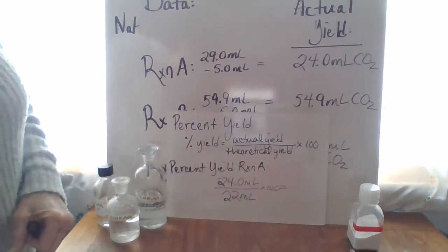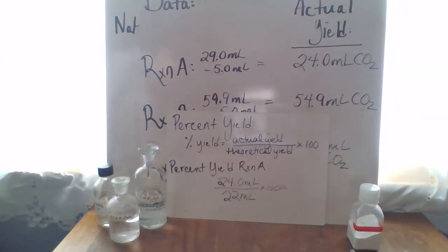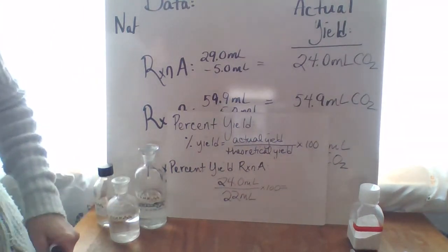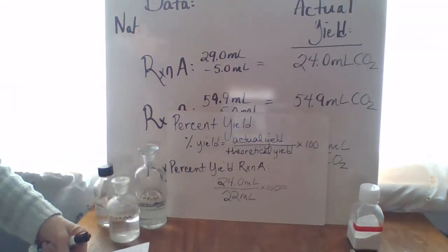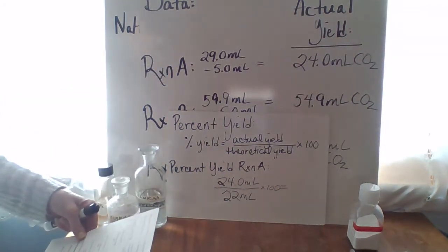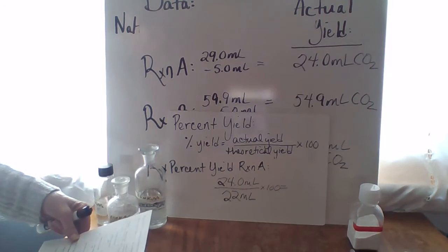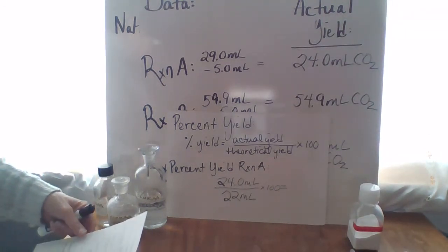Now I want to take a look at the rest of the chart. You need to complete that on your own for reactions B and C. We have the actual values earlier in this video. And you need to come up with the percent yield calculations. And then the post lab questions.